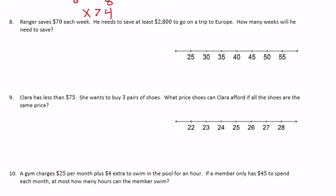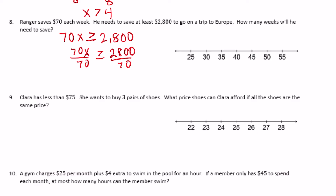Number 8: Ranger saves $70 each week and needs to save at least $2,800 for a trip to Europe. So 70x is greater than or equal to 2,800. Dividing both sides by 70 — crossing off zeros, 28 divided by 7 is 4, so 280 divided by 7 is 40 — gives x is greater than or equal to 40. On the graph, I circle 40, fill it in, and draw the arrow to the right.